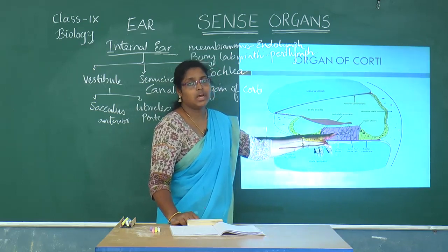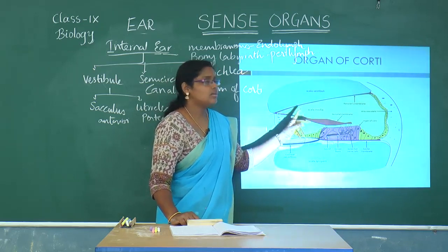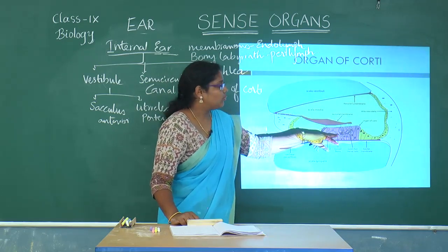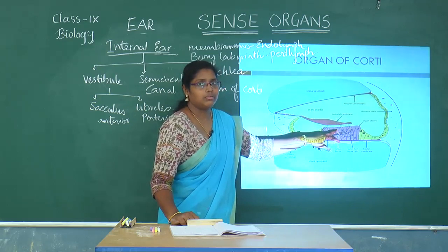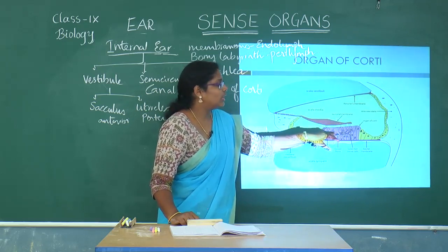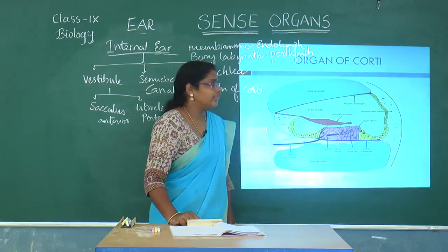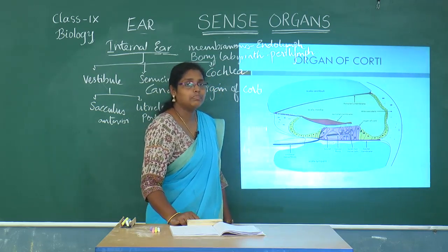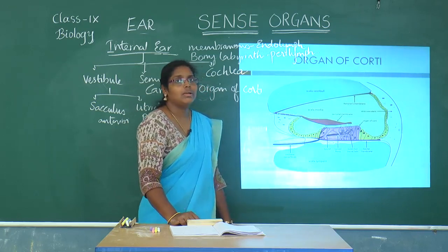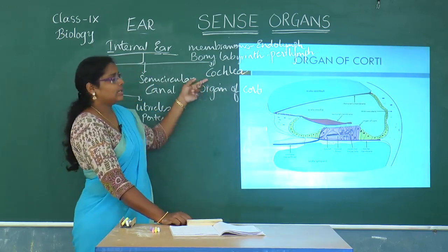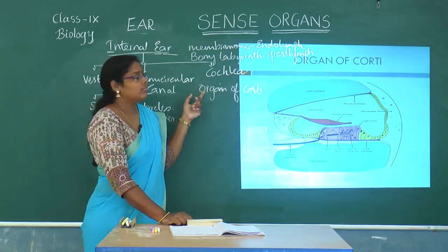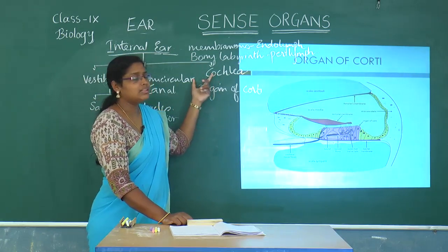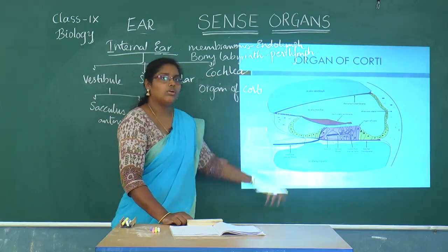Sound impulses are converted into electrical impulses through the organ of Corti, which plays a very important role in hearing. Since the cochlea contains the organ of Corti, the cochlea is considered the sensory part of the ear.